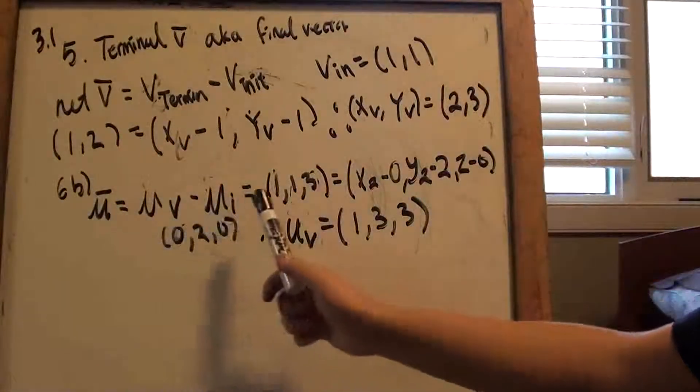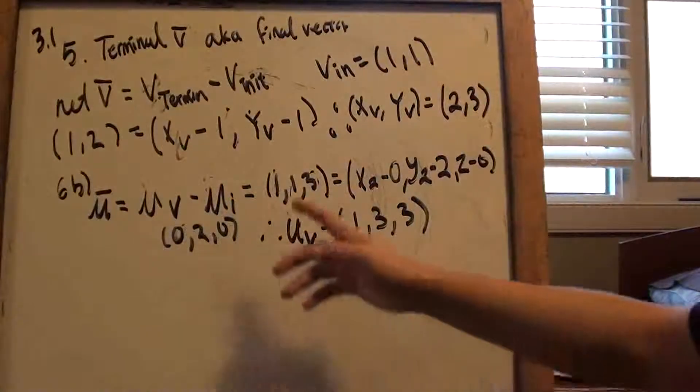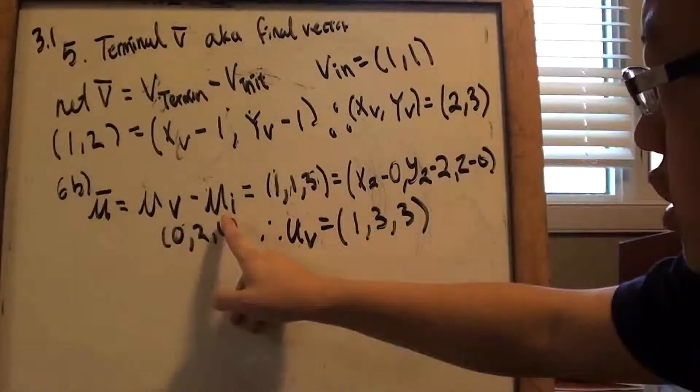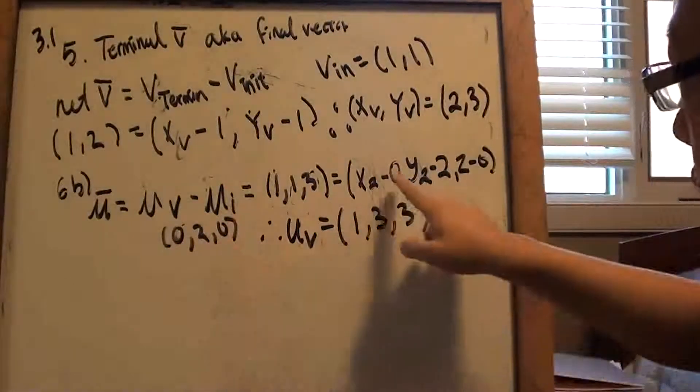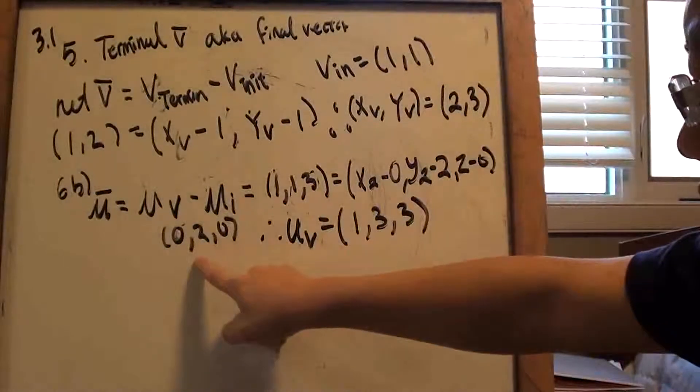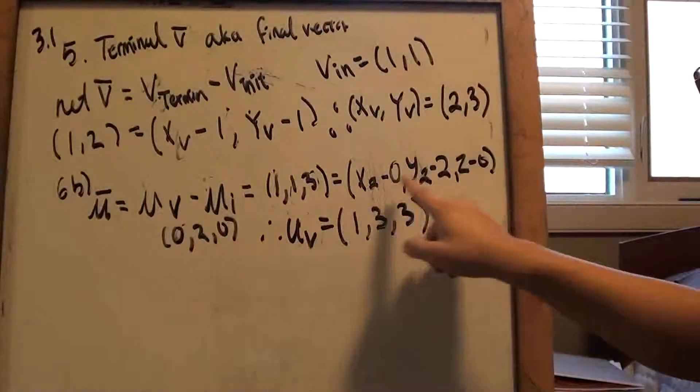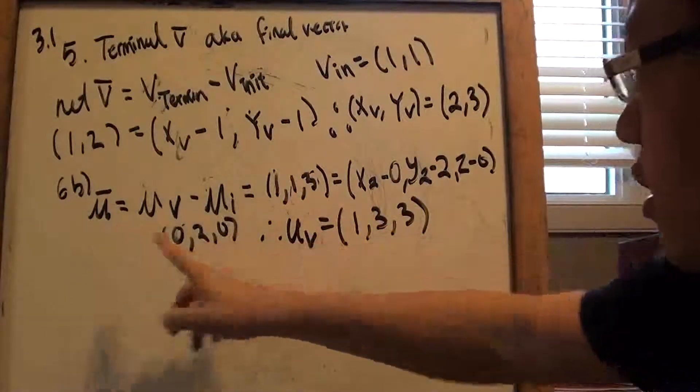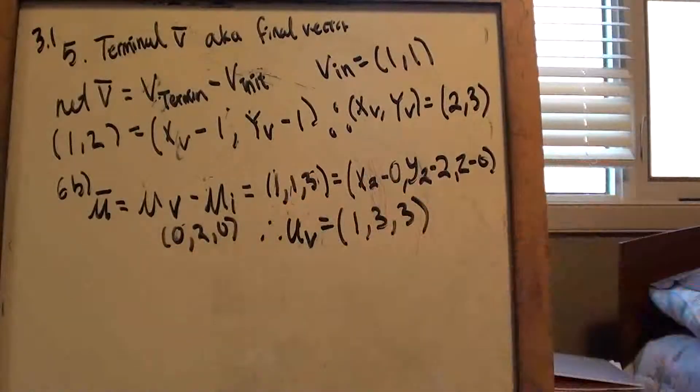6b. Same idea. Three dimensions again, but the same thing. The initial coordinate is 0, 2, 0. That's why I have negative 0, negative 2, negative 0, because I'm subtracting with initial. So I don't know what the final is, but it will have to give me 1, 1, 3, because that is the vector coordinate. Done.